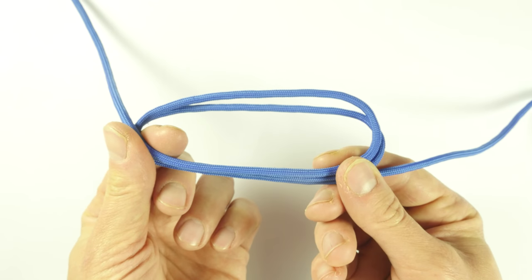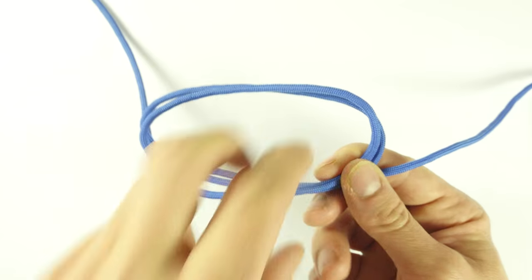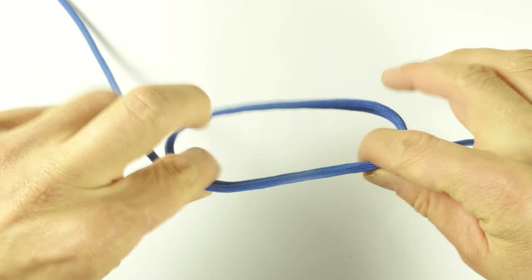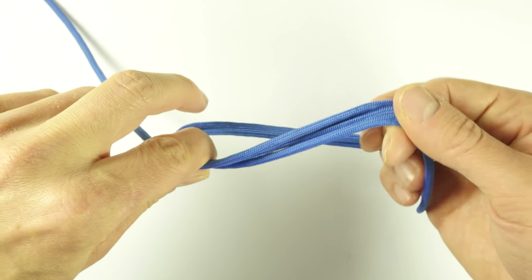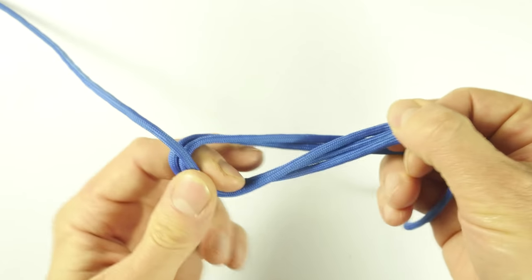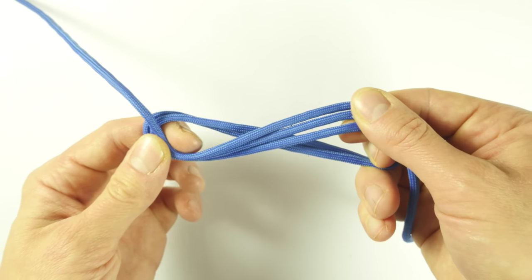Now what we're going to do is twist these loops. So grab this right part, twist it, like this. So basically we get a figure eight.